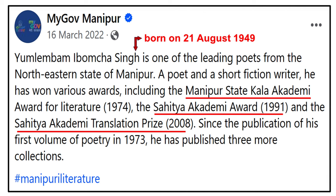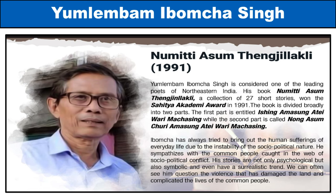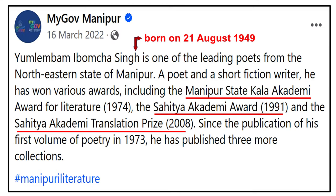About the Poet: One of the leading poets and short fiction writers from the north-eastern state of Manipur, Yumlambam Ibomcha Singh was born on 21 August 1949. He has won various awards, including the Manipur State Kala Academy Award for Literature in 1974, the Sahitya Academy Award in 1991, and the Sahitya Academy Translation Prize in 2008. He lives in Imphal, the state capital of Manipur.